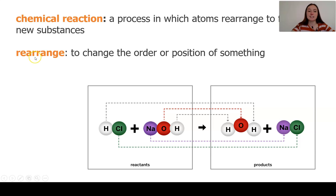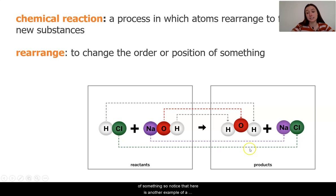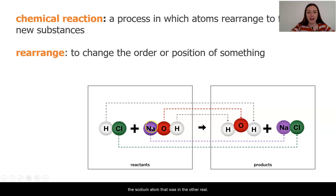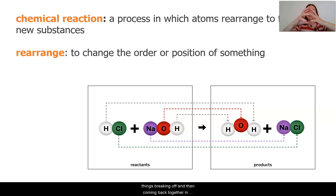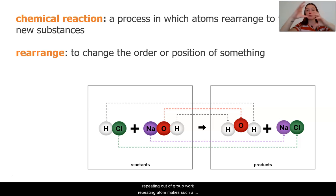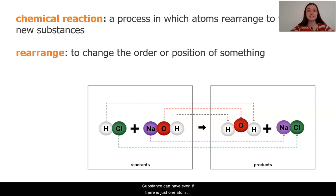And what I mean by rearrange is changing the order or position of something. Notice that here is another example of a chemical reaction — the chlorine atom is becoming attached to the sodium atom that was in the other reactant. In the digital model, we saw things breaking off and then coming back together in different ways. And as we learned in our first part of the unit, even just having one atom different in that repeating atom group makes such a big difference to the properties that substance can have. Even if there is just one atom difference, it is a different substance.